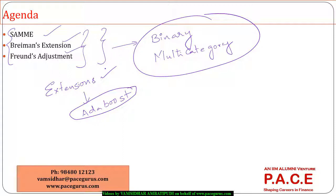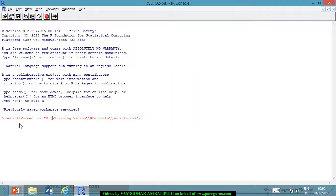We will be taking a dataset — the same training data and testing data for all three models. We can run the model with one of them, make modifications for the second and third, and test them on the test data to see which models give what kind of accuracies. The data we are considering is the vehicle data. Loading this vehicle data, there are 634 rows and 15 columns.